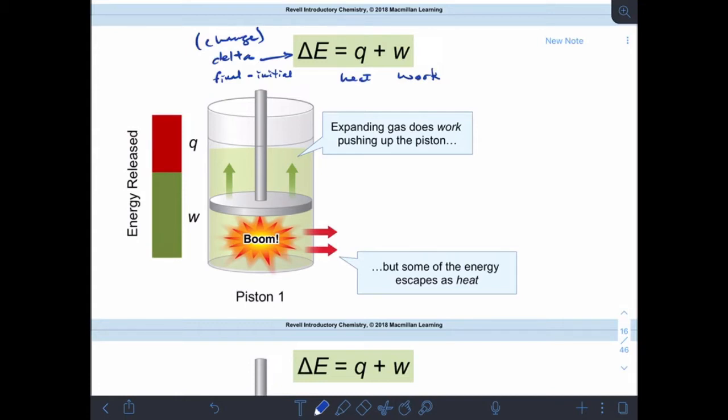Okay, and remember, we still have to deal with the signs of Q and W. If energy is coming out of the system, then Q will be negative. If work is coming out of the system, then work will be negative, and vice versa.